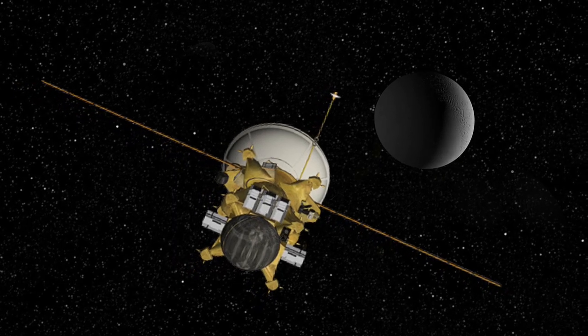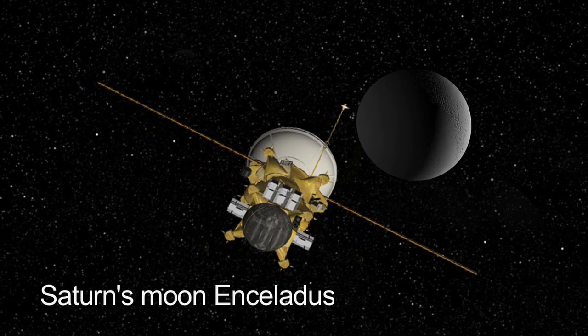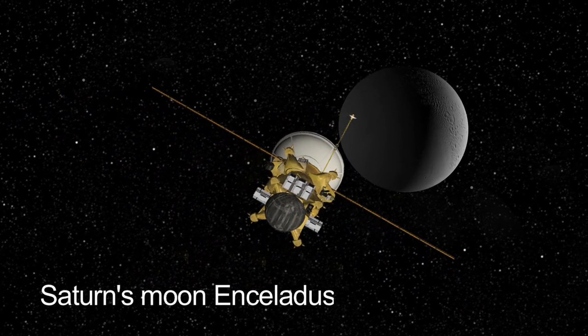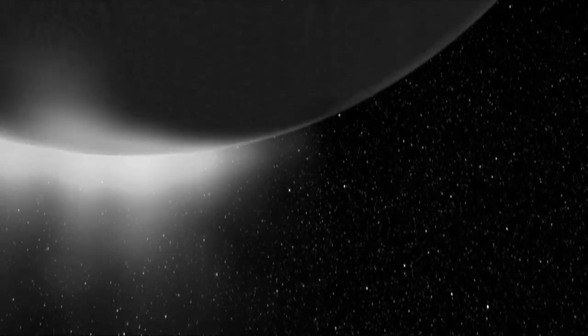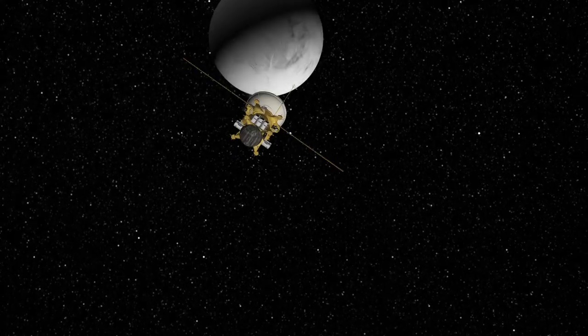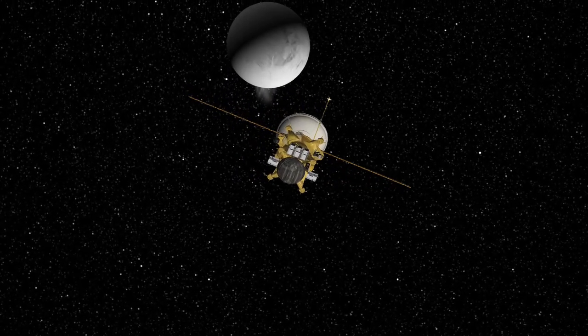The Titan Saturn System mission also will go to Enceladus, the tinier moon a thousand times smaller than Titan, which has volcanoes, geysers essentially, that are spewing material from the inside of this moon outward.